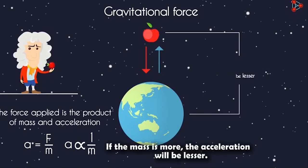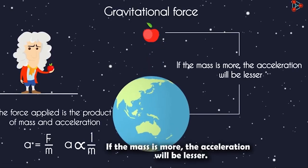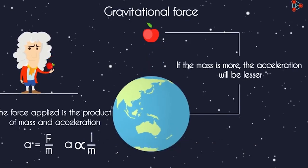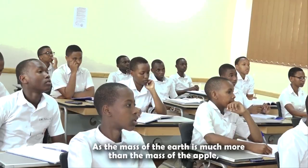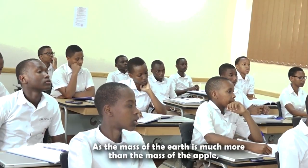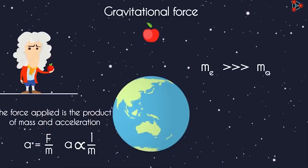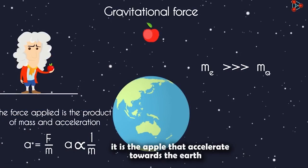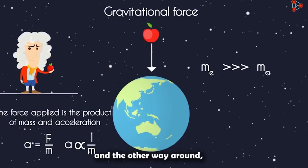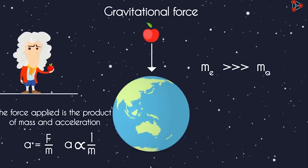If the mass is more, the acceleration will be lesser. As the mass of the earth is much, much more than the mass of the apple, it is the apple that accelerates towards the earth and not the other way around.